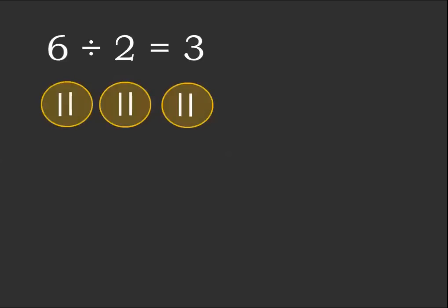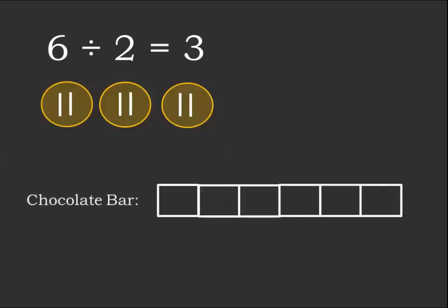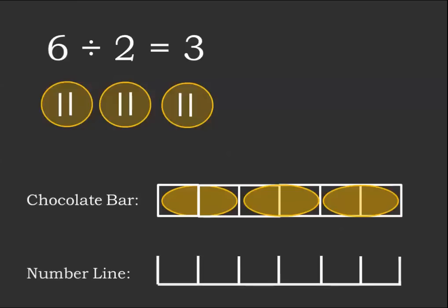Imagine you've got 6 things. Dividing by 2 might mean put them into groups of size 2. So, you could divide the 6 things into groups of size 2, putting 2 sticks in each group, and that would give you 3 groups. You could also imagine a chocolate bar with 6 pieces, and 6 divided by 2 would mean put two pieces in each group. That's shown with the circles around the two pieces. We could even represent this on a number line from 0 to 6, divided up into groups of size 2.